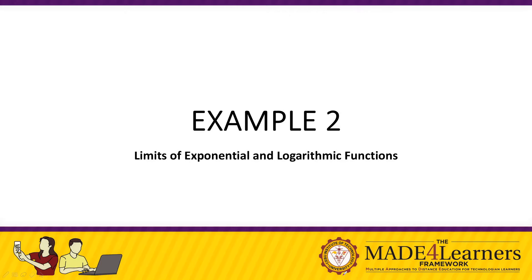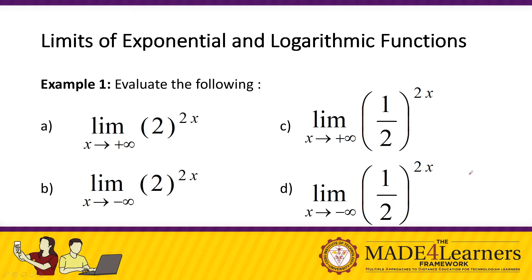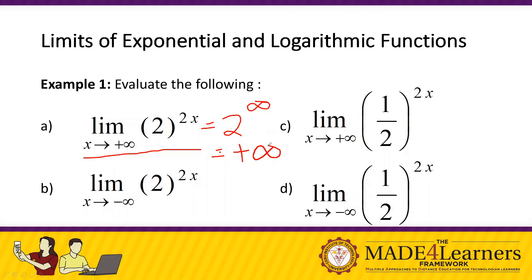Let's have example number 2 for limits of exponential and logarithmic functions. Evaluate the following: the limit of 2 to the power of 2x as x approaches positive infinity. We simply use the rule: 2 to the power of 2 times infinity is 2 to the power of infinity, and the answer is positive infinity. By the way, when we use the symbol infinity without a sign, it just means positive infinity. So the answer for A is positive infinity.